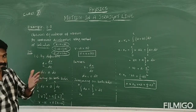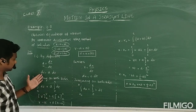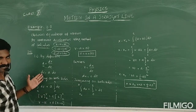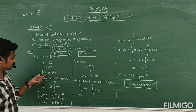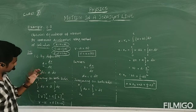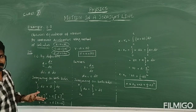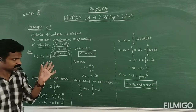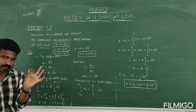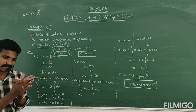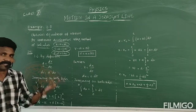Here dV is the differential form — a very small instant value. So, after integrating over time, let's take the integration. The differential form represents a very, very small instantaneous value, so we integrate on both sides.